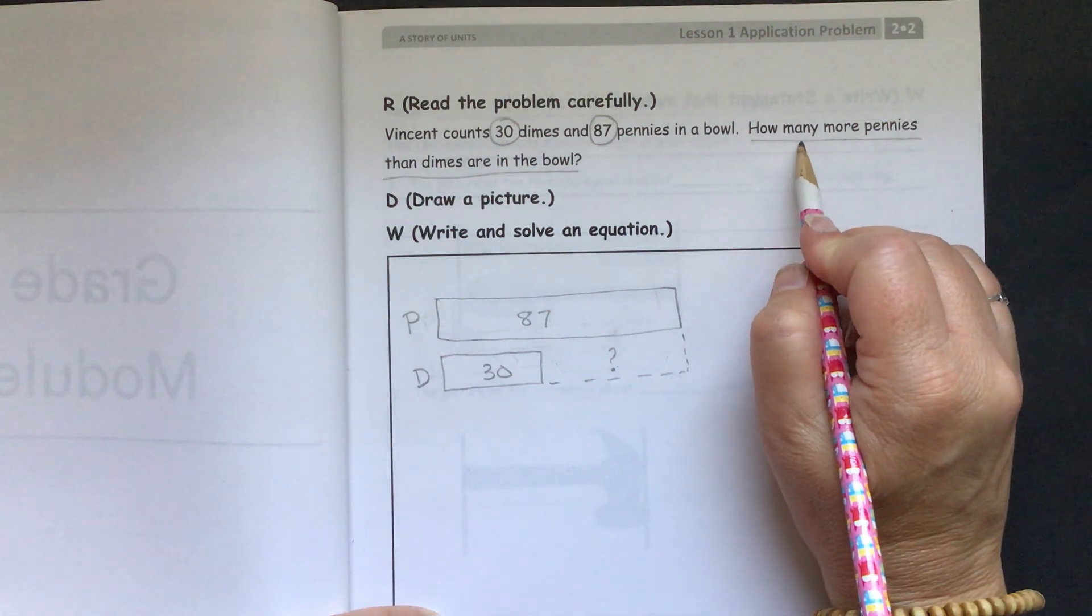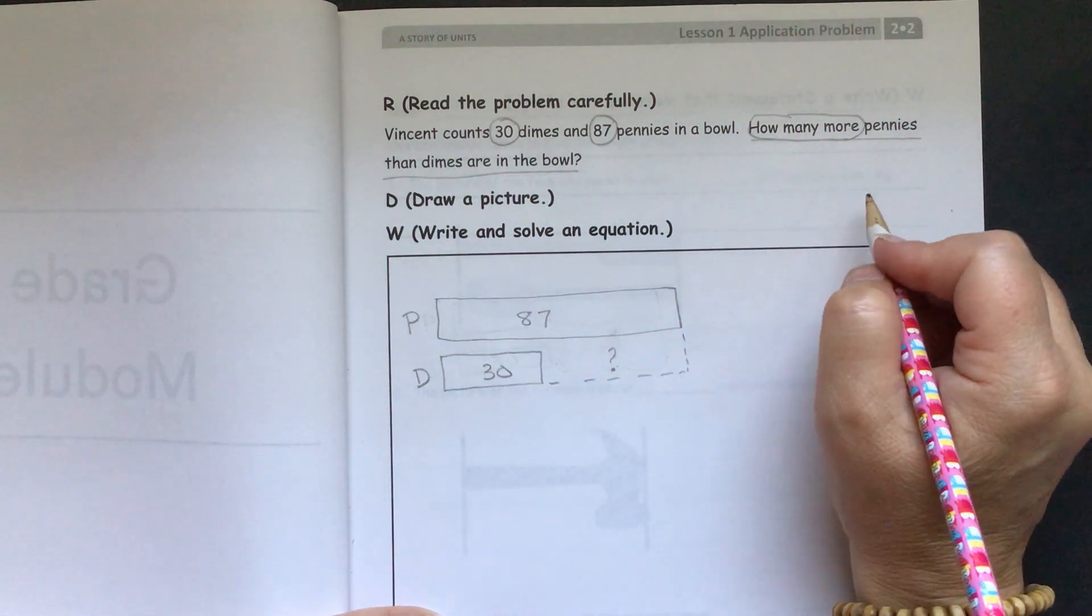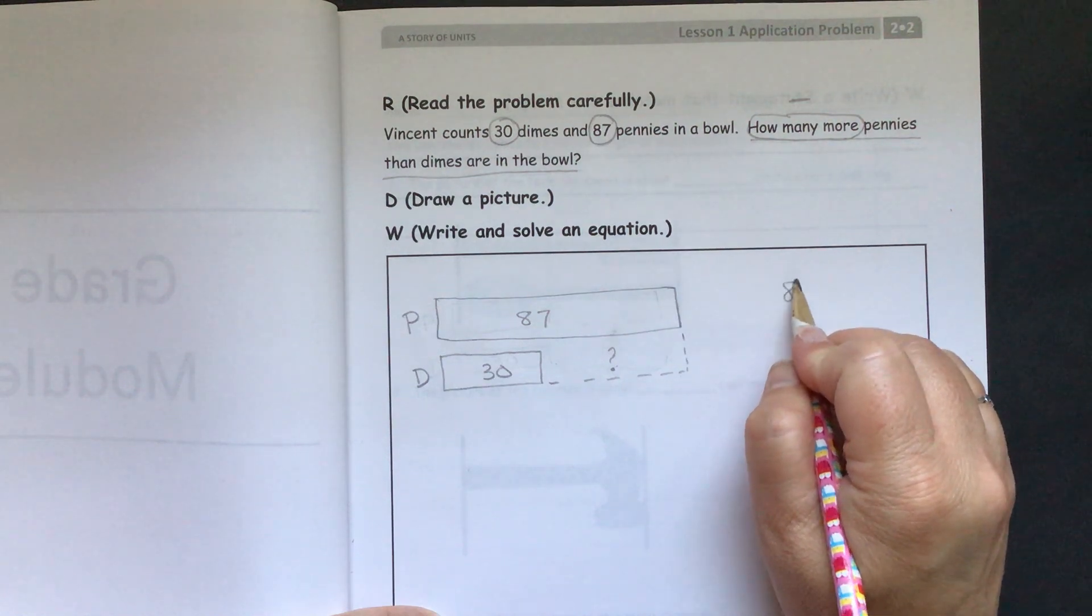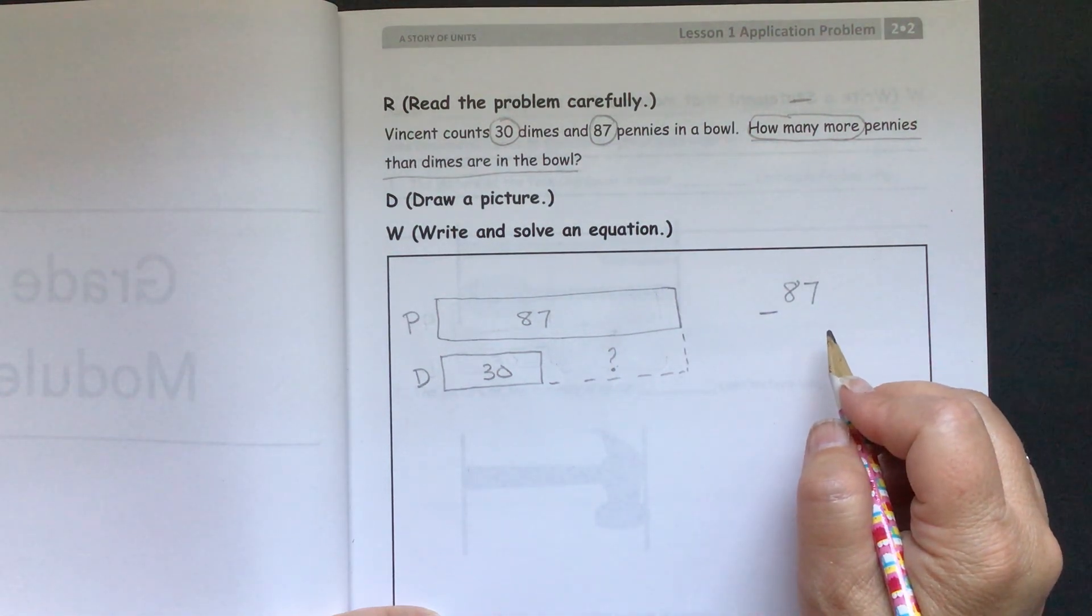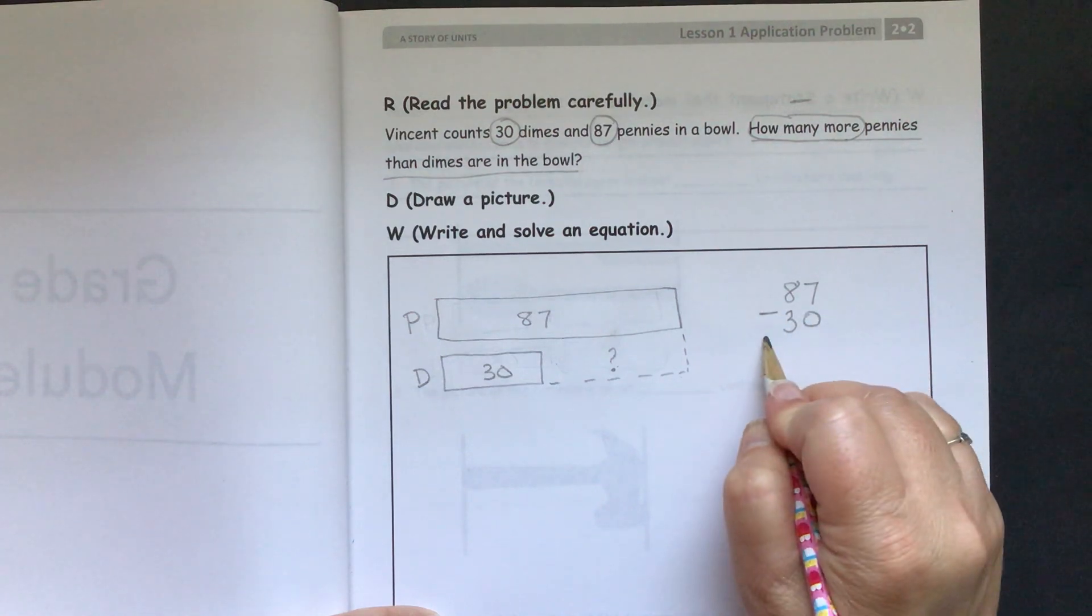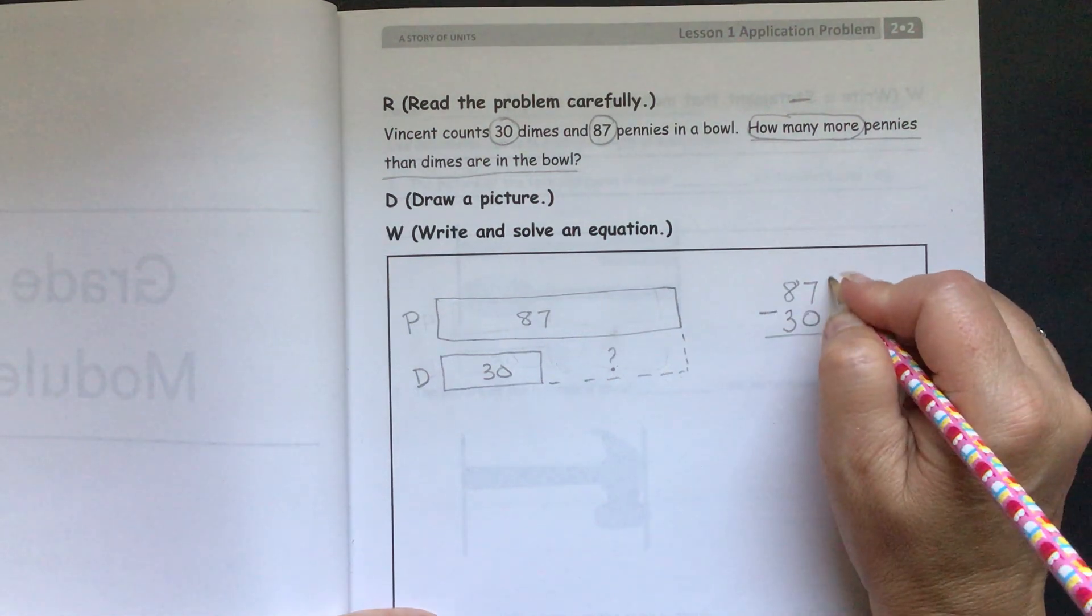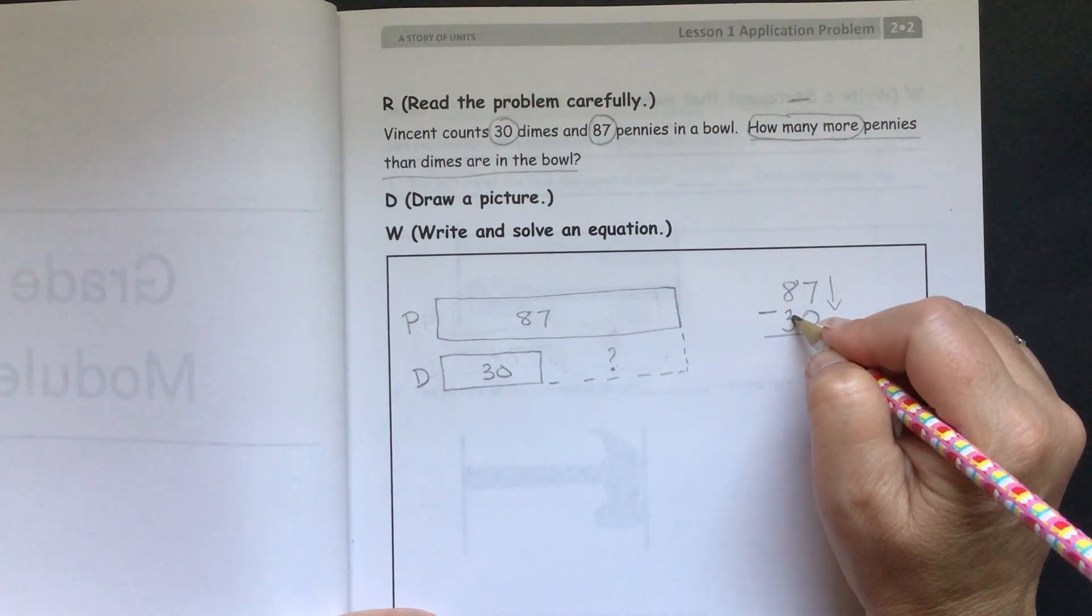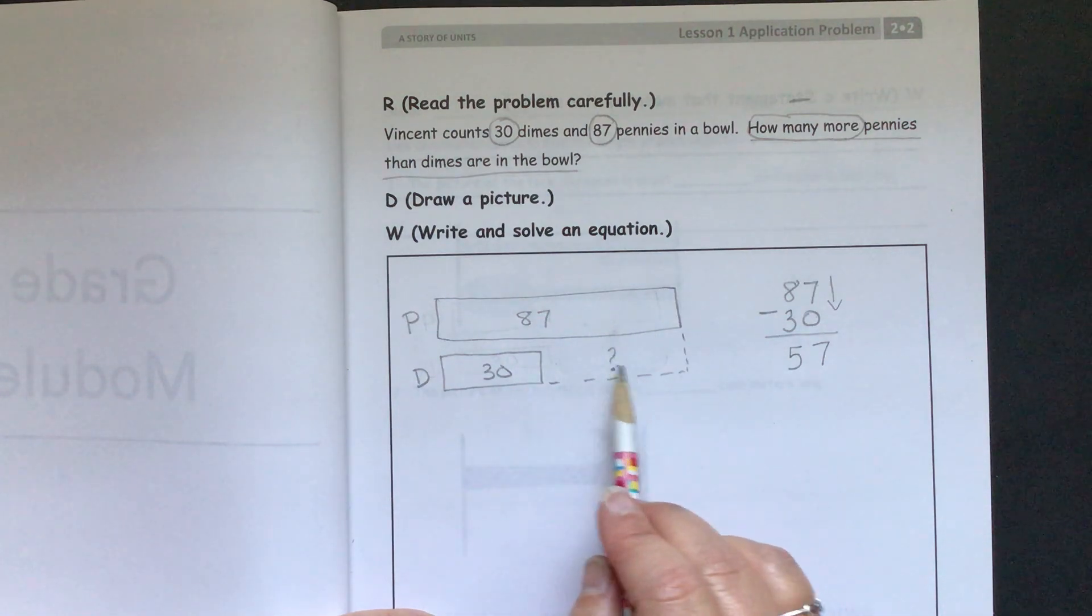So whenever you see in a word problem, how many more, that's going to let you know that you can use subtraction to figure out this problem. So I'm going to line up my equation vertically. I think it's a pretty easy way to do this. We have to make sure we line up our tens and ones correctly so we don't get confused on what we need to subtract. And then we go straight down. We always start on the right. So 7 minus 0 is 7, and 8 minus 3 is 5. So we can see the difference between 87 and 30 is 57.